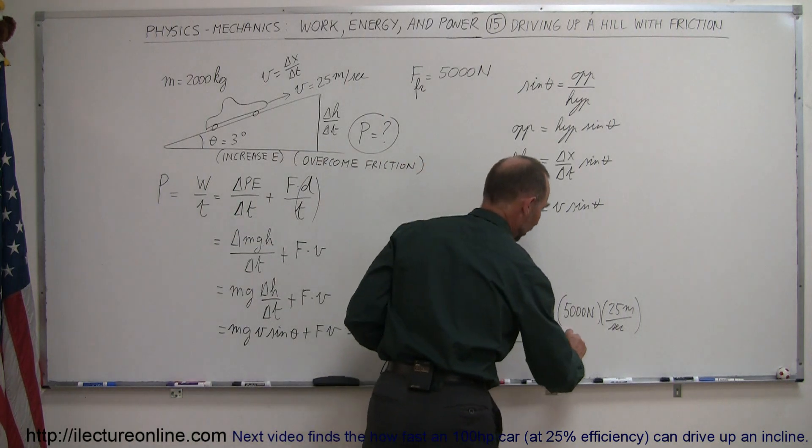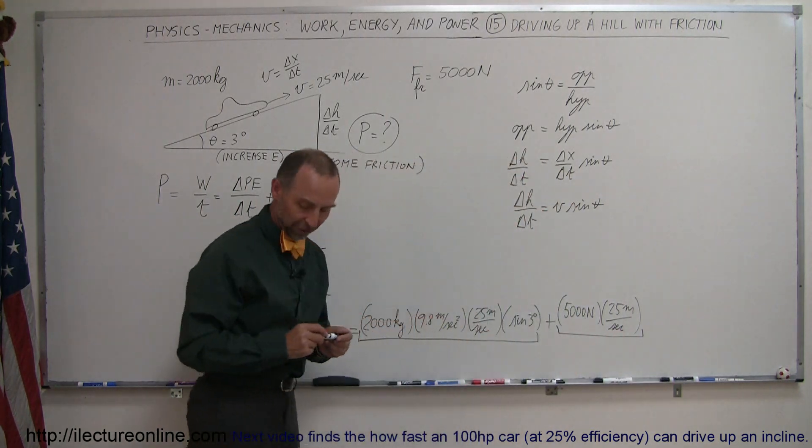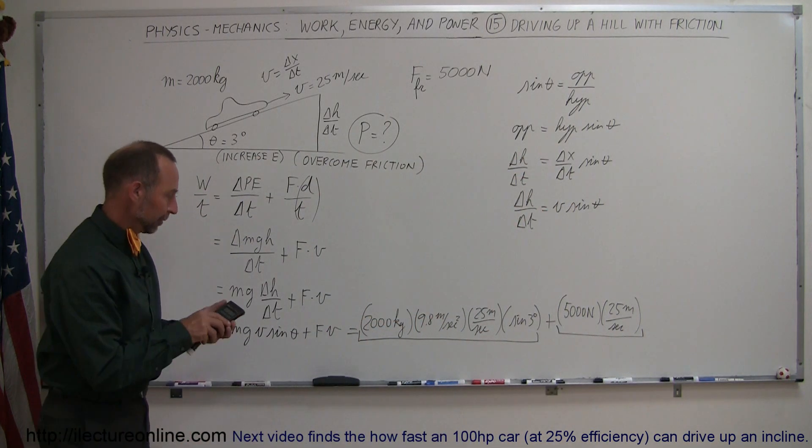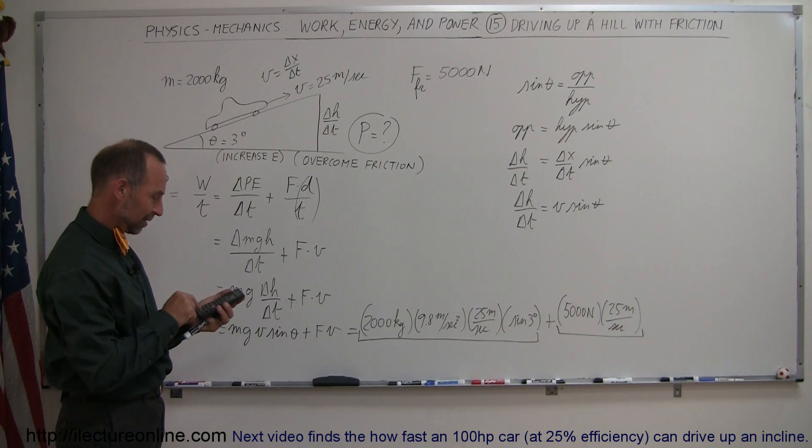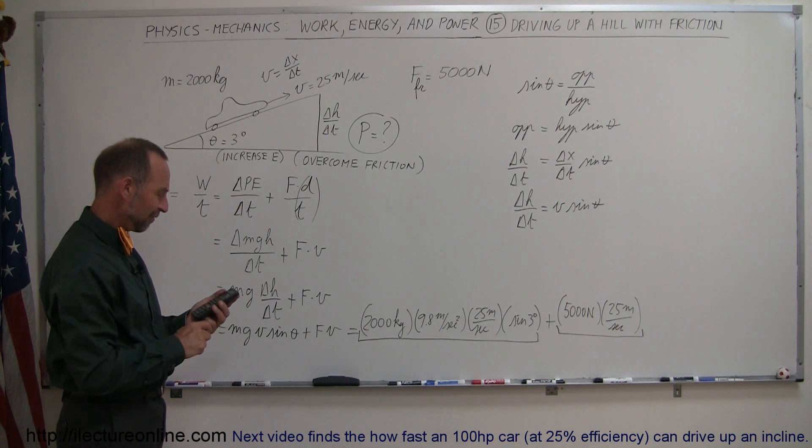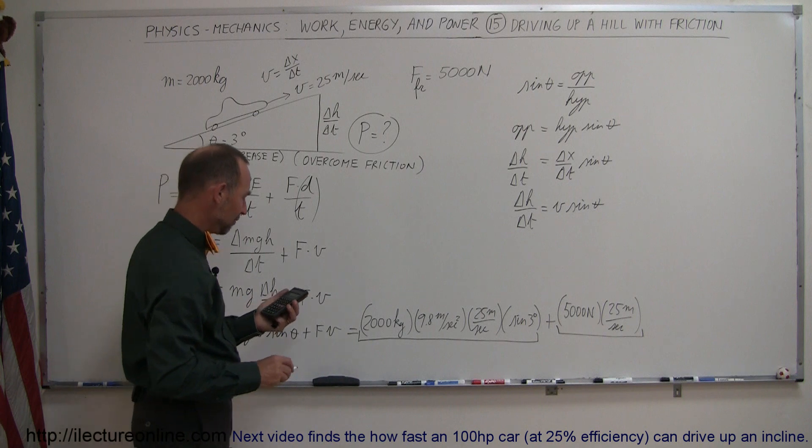All right, and that would be the portion, the power required to overcome the friction. Now let's work this out. So we have 2,000 times 9.8 times 25 times the sine of 3 degrees equals, and we get 25,645 watts,